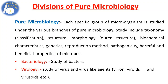The divisions of pure microbiology are: Bacteriology — the study of bacteria; Virology — the study of viruses and virus-like agents like virion, viroids, and virusoids. If you want to know about the difference between virus, virion, viroids, virusoids, and prions, I have given the link in the description box. You can check there.